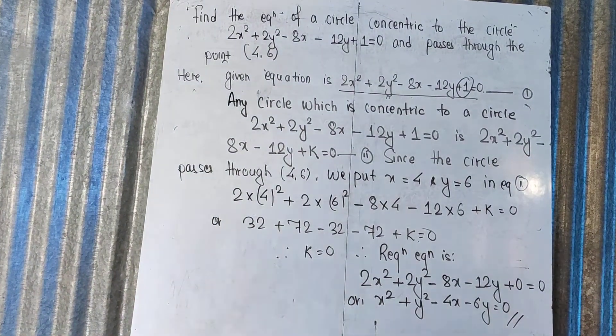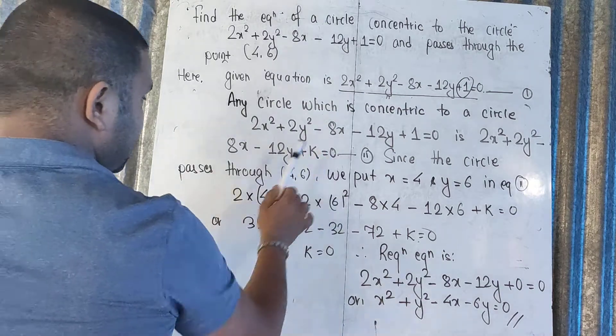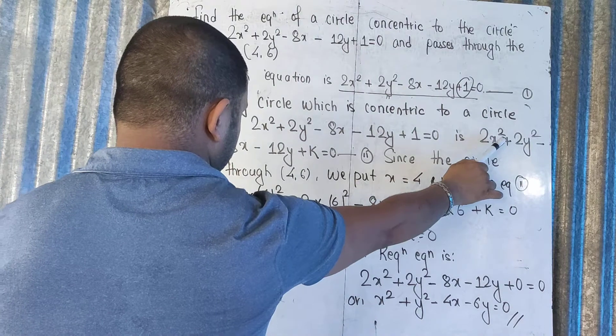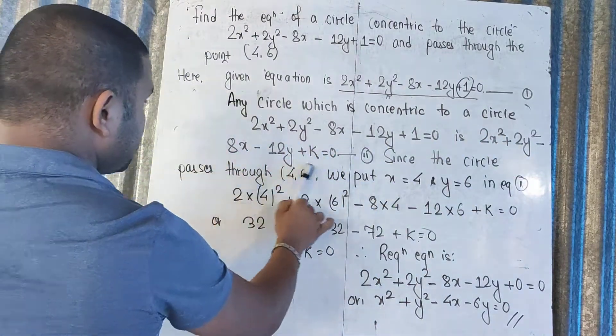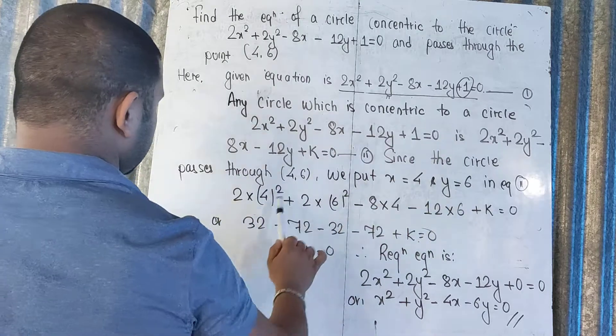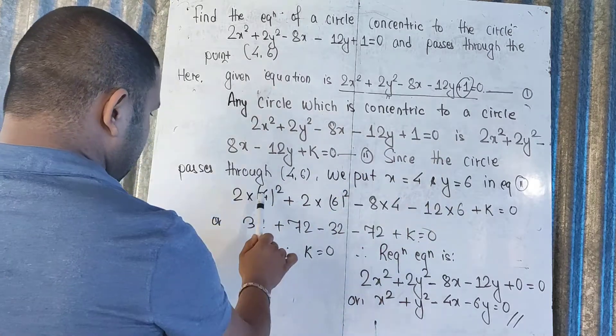This is the case, the circle passes through the point (4, 6).